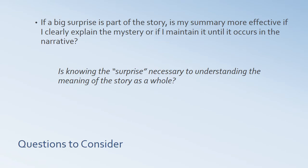And finally, if there's a big surprise in the story — like A Rose for Emily has — is the summary more effective if you clearly explain the mystery at the beginning, or maintain it until it occurs in the narrative? Would it be more effective to begin by announcing the big twist, or to summarize and only reveal it at the end? Is knowing the surprise necessary to understand the meaning of the story as a whole? There are multiple ways to answer all these questions — it's a matter of interpretation and your understanding of the story.